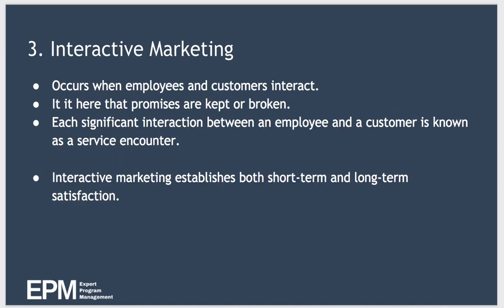Interactive marketing occurs when employees and customers interact. It is here where the promises made during external marketing are either kept or broken by employees or subcontractors. Each significant interaction between an employee and customer is called a service encounter. Interactive marketing is important because it establishes both short-term and long-term satisfaction — if the customer is satisfied with the service in the short term, they're more likely to be satisfied over the longer term as well.